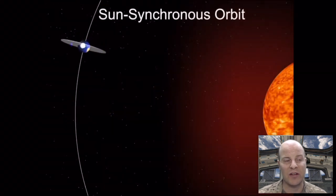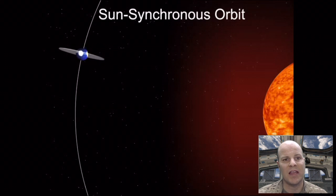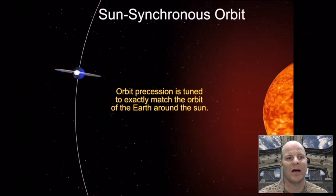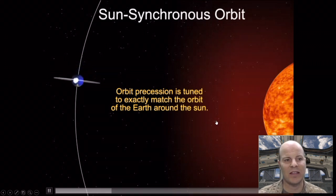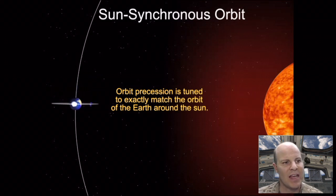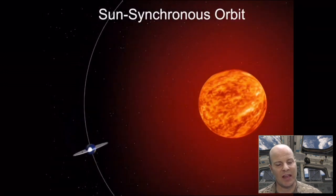Here we have our sun-synchronous orbit. And what you'll notice is the orbit is slightly shifting, slightly changing. It's precessing at exactly the same rate that the Earth is moving around the sun. And the net effect of this, if we let this animation play out a little bit, is that you'll see our orbit is actually changing a little bit each day, every day.